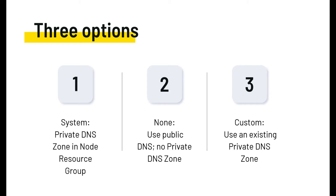The third option is a custom option where you use an existing private DNS zone. This is common in enterprise scenarios where virtual networks use custom DNS servers that must be integrated with private DNS zones globally. Instead of creating DNS zones randomly as with the system option, you create the private DNS zone in a central networking subscription and ensure the AKS cluster registers its record there. We will not cover option three today.